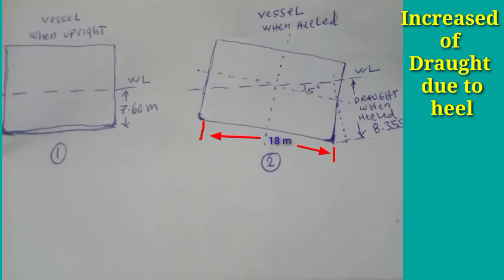Take a look at illustration number one and illustration number two. In illustration number one, the vessel is upright and our draft is 7.60 meters. In illustration number two, the vessel is heeled and we have a draft of 8.355 meters. This means that when the vessel is heeled, the draft is increasing, so it is very important that we know how to compute this increase of draft due to heel by knowing our probable angle of heel, so that its application into our under-keel clearance calculation will be taken into account.